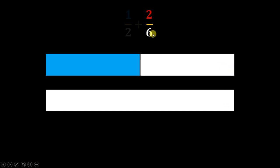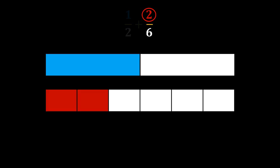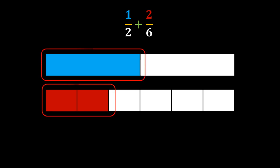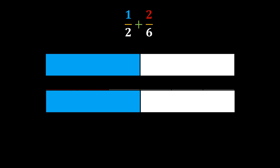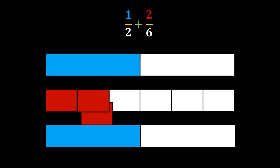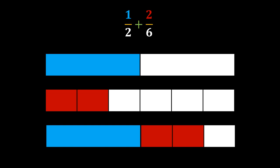To represent 2 sixths, we use the same sized bar that we used for 1 half. The denominator is 6, so we divide this bar into 6 equal pieces and shade 2 of them. Now this is what we have and we need to add them — that means we have to combine them. So why can't we simply combine them the way we combined in the last question? We could take the part from the first fraction and add the part from the second fraction. But why can't we do that?